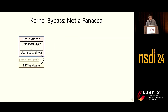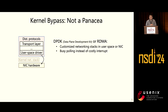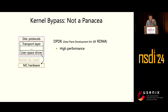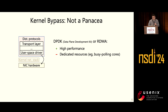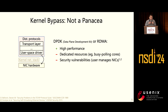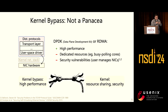How can we deal with this problem? People have already thought of kernel bypass — but does this solve all the problems? Unfortunately, the answer is no. The representative technique is DPDK or RDMA, which moves customized networking stacks from the kernel to user space or even to the NIC hardware as in RDMA. This gives high performance, but also requires dedicated resources such as busy-polling cores, which is bad for low-load cases and undesirable in public cloud where every core should do application work. It may also bring security vulnerabilities, since users can directly manage NIC hardware without kernel access controls or firewalls. Overall, there is a strong tension between high performance and resource sharing and security — both kernel bypass and standard kernel networking can hardly achieve both.